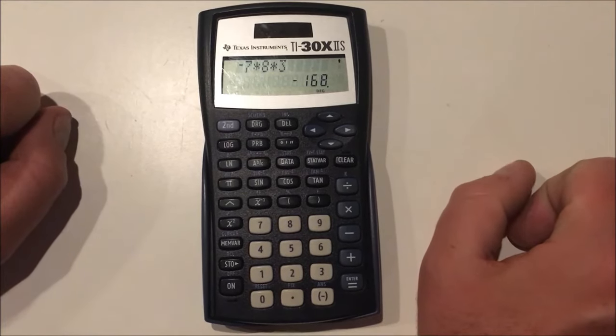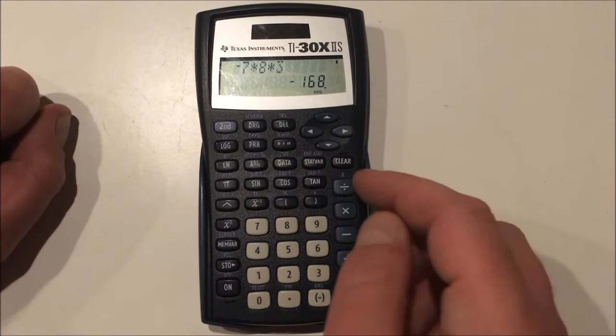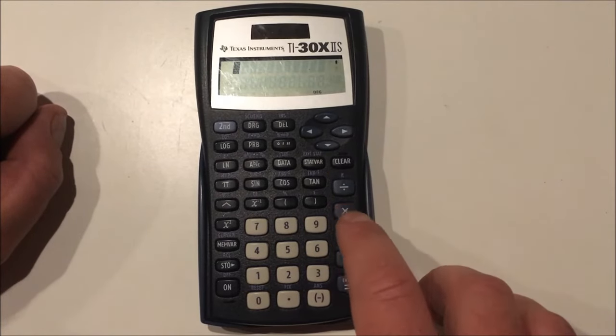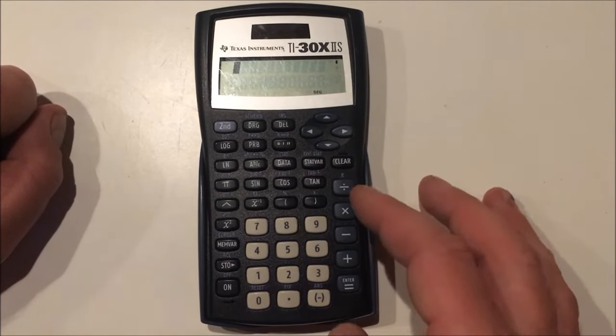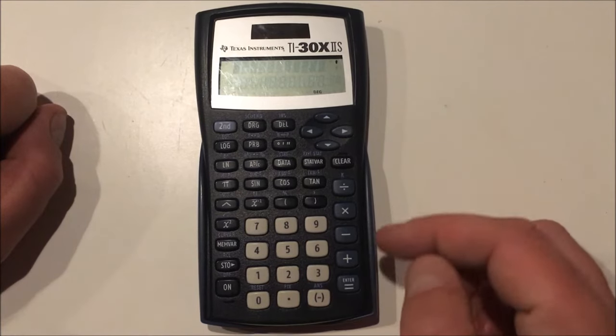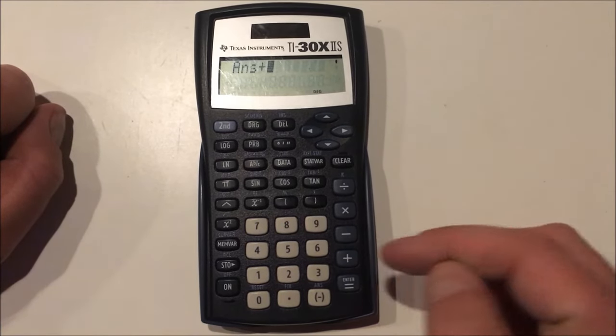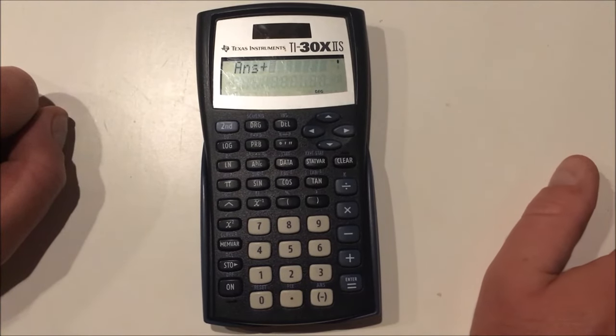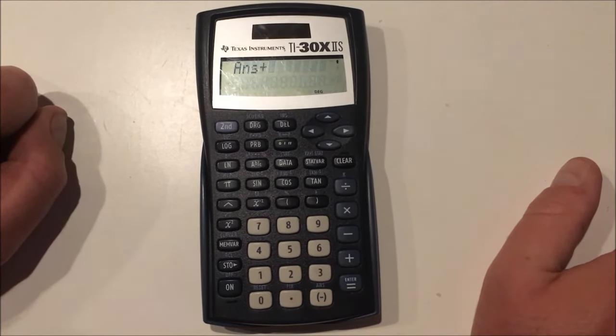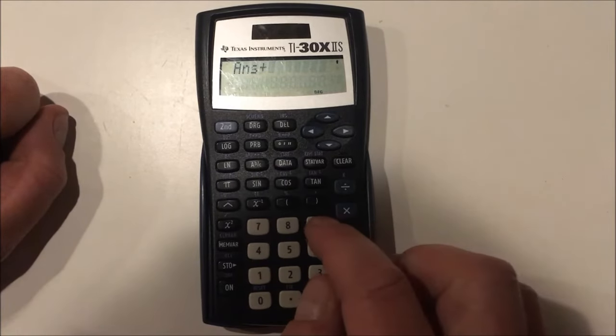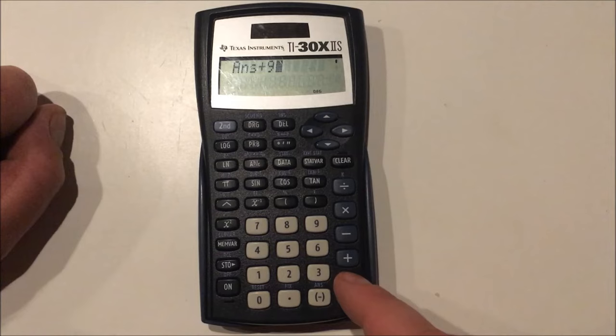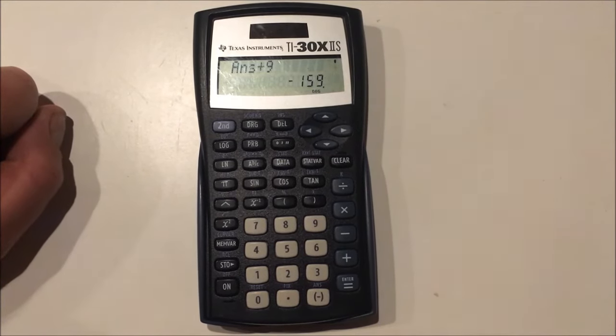Another memory feature is called ANS. So this feature is automatically utilized when I press a button for an algebraic operation before I put a number such as the plus sign. So what this is doing is it is accessing the previous answer from my previous expression. And I'm going to add something to it or I can subtract or what have you and get my next number.